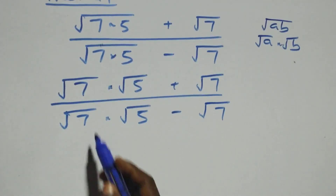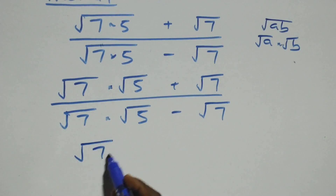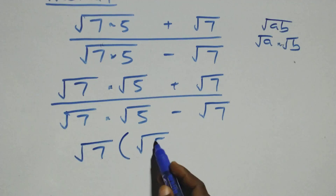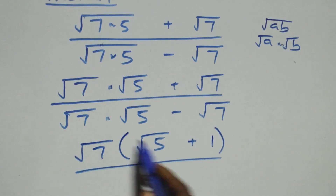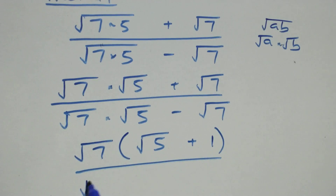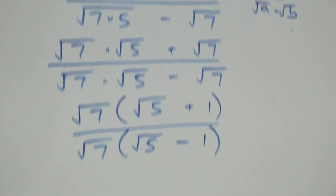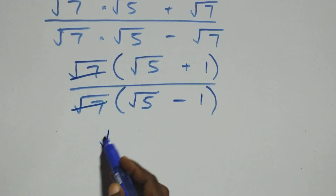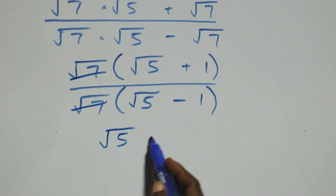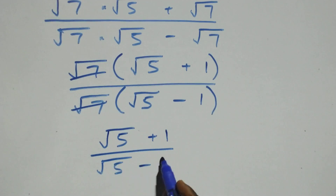Next step: root 7 is common up here, we factor it out. We have root 7 into brackets, and here remains root 5 plus 1. Then also dividing by root 7, also common here, we have root 7 into brackets and here remains root 5 minus 1. From here, root 7 cancels with each other. All we have becomes root 5 plus 1 over root 5 minus 1.